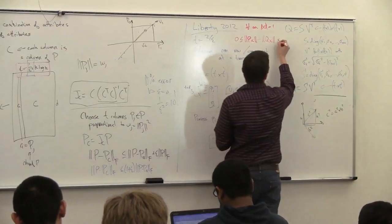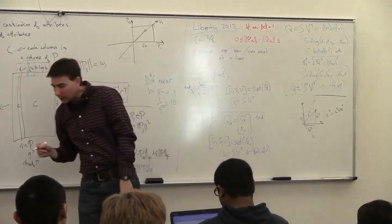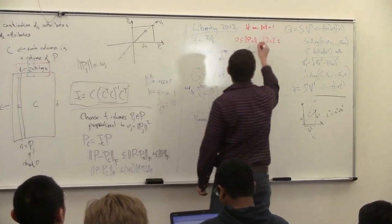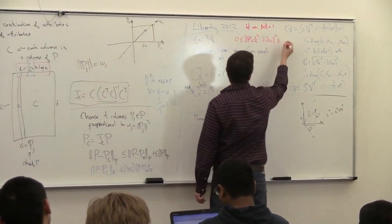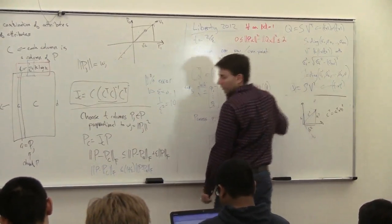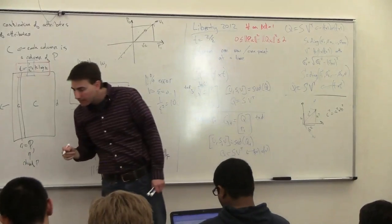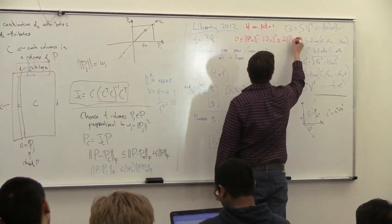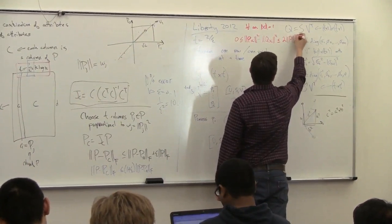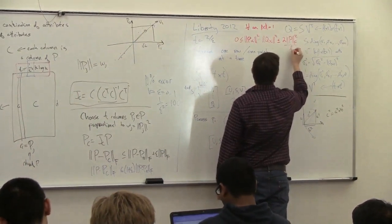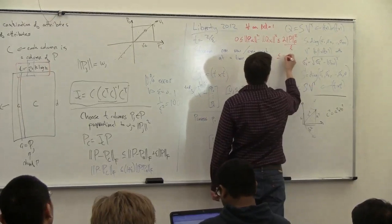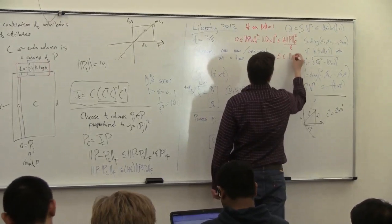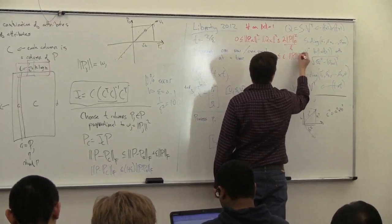For representative data, this is going to be less than, these are actually squared, this is going to be 2 times Frobenius norm squared over L, which is less than or equal to epsilon times Frobenius norm.